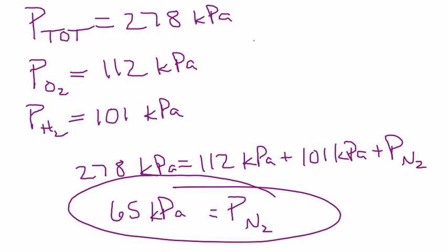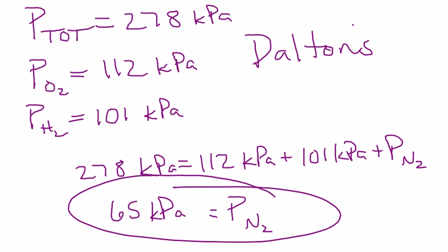Once we get that, it is just simple subtraction. P-nitrogen, the pressure from the nitrogen, is going to be 65 kilopascals. Again, that's Dalton's Law of partial pressures. With that, I've walked you through about half of the homework for number 5. Hopefully that cleared up any questions you have, and you'll come to class tomorrow and get a big old check, or maybe even a plus if it's a plus day. Have a good evening. Bye.